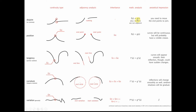So F of X and G of X are not equal to each other. If you think about a graph, these are functions, so they have to pass a vertical line test. At a particular X — which is going to be the end of one curve and the beginning of another curve —